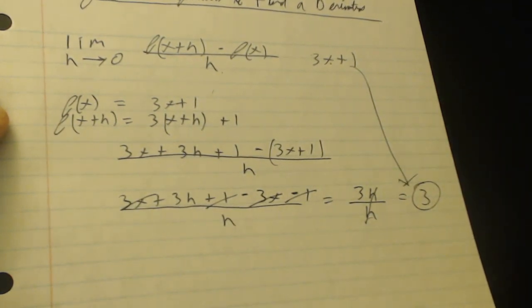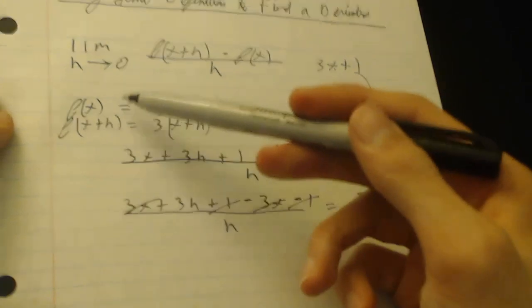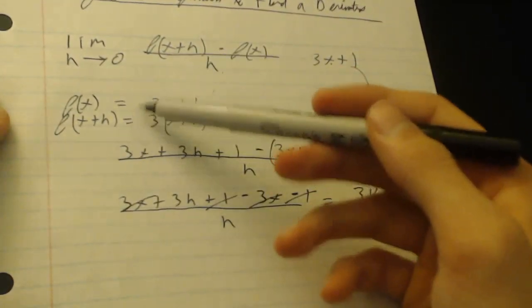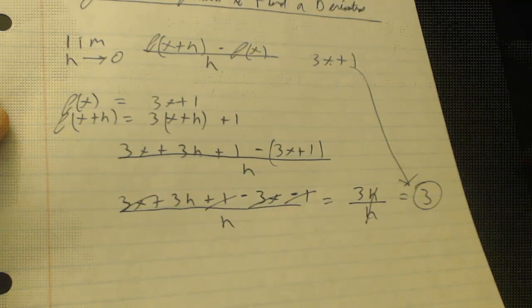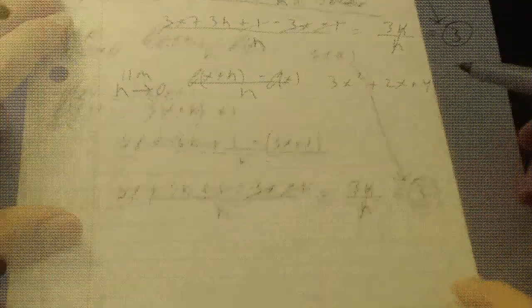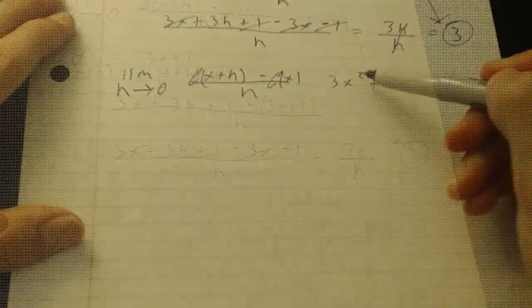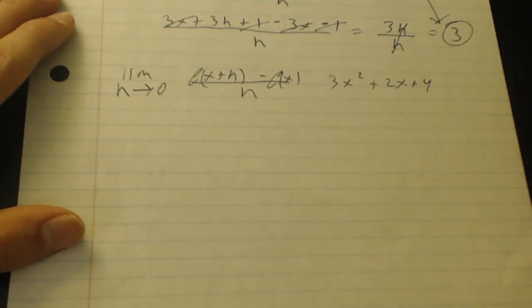Alright, so you can see that's pretty simple. Just make sure you just do each individual step. Just find these and plug them in and then it's just simple algebra from there. Alright, we're going to do another one after this. We're going to solve 3x squared plus 2x plus 4.